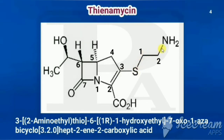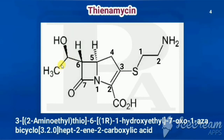For the sixth position of thienamycin: the substituent is CH(OH)CH3, which has two carbons (ethyl). The first carbon of the ethyl group has a hydroxy group, and that carbon has R configuration, giving (1R)-1-hydroxyethyl. The complete chemical name of thienamycin is: 3-[(2-aminoethyl)thio]-6-[(1R)-1-hydroxyethyl]-7-oxo-1-azabicyclo[3.2.0]hept-2-ene-2-carboxylic acid.